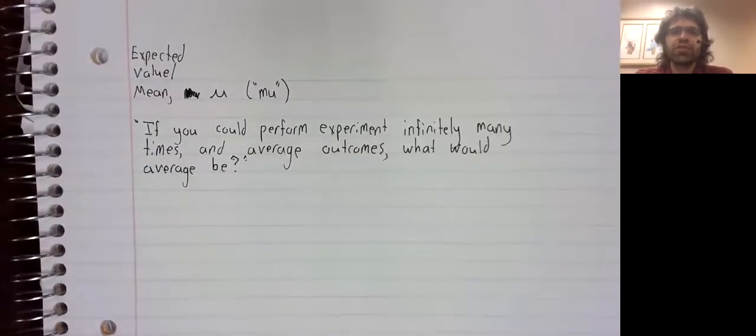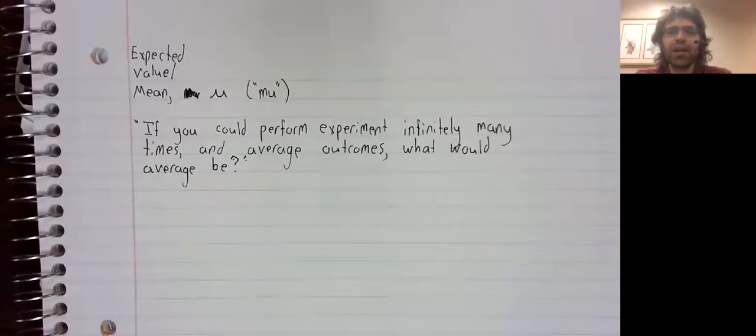is a generalization of the concept of an average. Essentially, if you could perform the experiment infinitely many times and average those infinitely many outcomes, what would that average be?